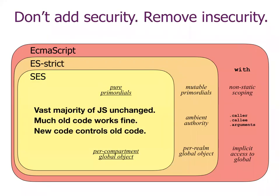Despite the small number of things that were turned off, the really important thing about the SES design is that the vast majority of JavaScript is still present and unchanged in its semantics. The result is that a tremendous amount of old code runs unmodified in SES. We've verified that empirically — at Google in the Caja project where SES was born in the ES5 era, and more recently with modern SES at Salesforce, MetaMask, Agoric, and others.